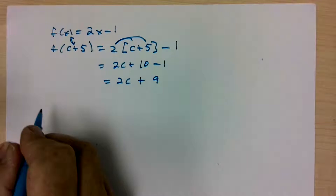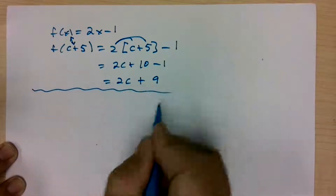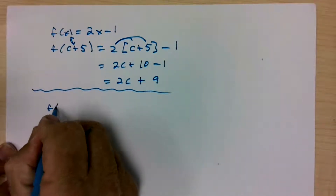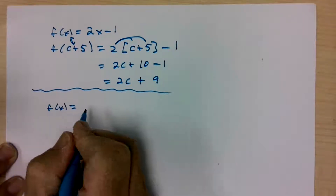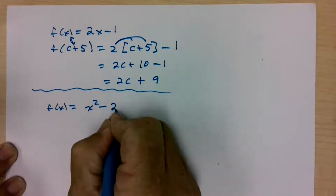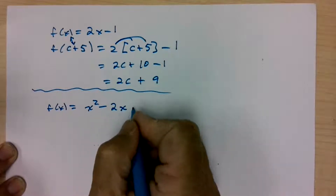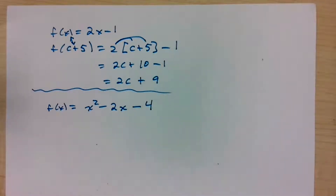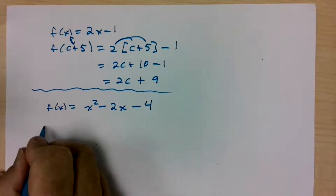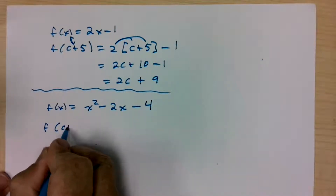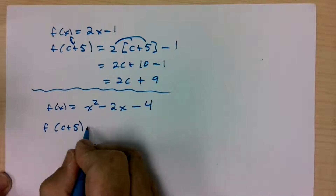Let's take a look at another sort of function: f of x equals x squared minus 2x minus 4. Before trying to graph it, let's plug c plus 5 in here and see how that behaves. What would f of c plus 5 be for this function?